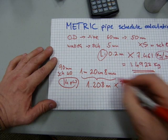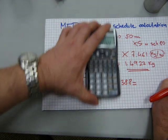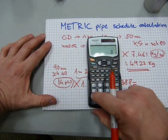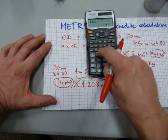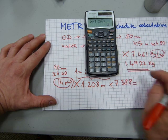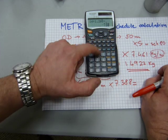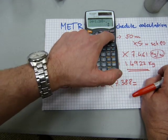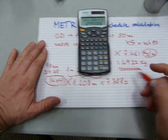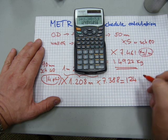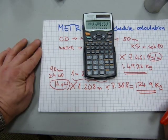Times 7.388. And because we have 14 pieces of them, we need to times it by 14 as well. 14 times 1.208 times 7.388 equals 124.9 kilograms. That's the final answer to this question.